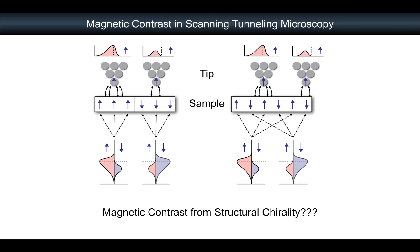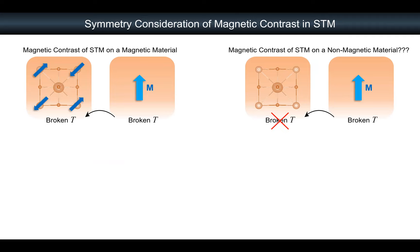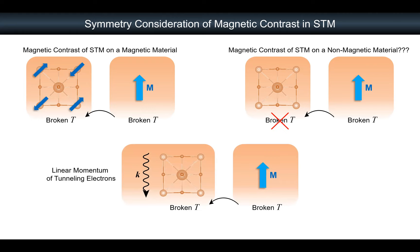Time-reversal symmetry is very relevant to this situation. On the left side, when you put any magnetically ordered material, it is broken about time-reversal symmetry. On the right side, the magnetic contrast is also broken about time-reversal symmetry. When you put a non-magnetic system, it is not broken under time-reversal symmetry — very trivial. But we can play with something like this.